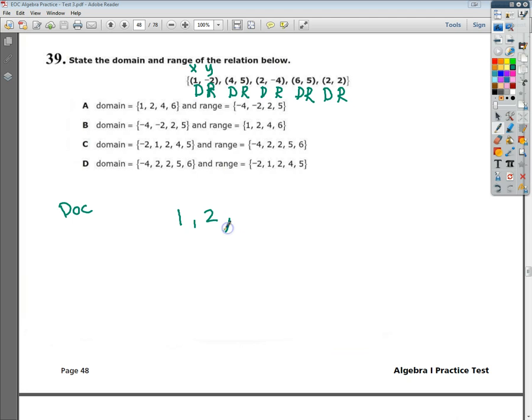You never write them twice if they show up twice. Once you use them, you should probably mark them out. 4 and 6. So there's my domain.